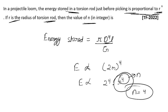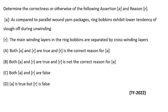This is a direct formula-based one-mark question. You just need to remember this formula for a projectile loom. Now moving to the next question, which is an assertion-reason type.